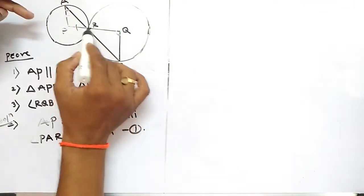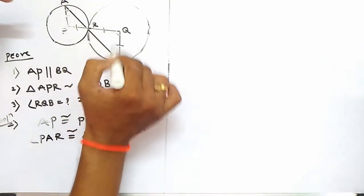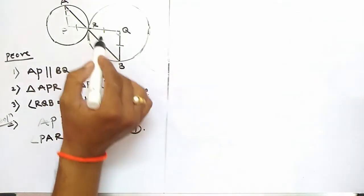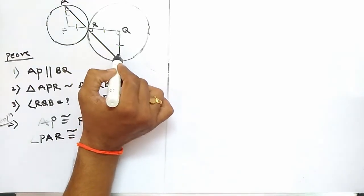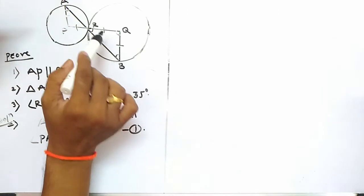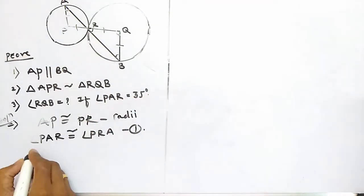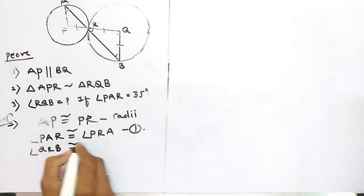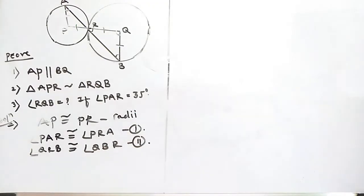Now, in the second triangle RQB, similarly RQ is congruent to BQ, because these two are the radii of the same circle. From this, we can show that angle QRB is congruent to angle RBQ, because these two angles are opposite to congruent sides. So angle QRB is congruent to angle QBR. This is equation two.